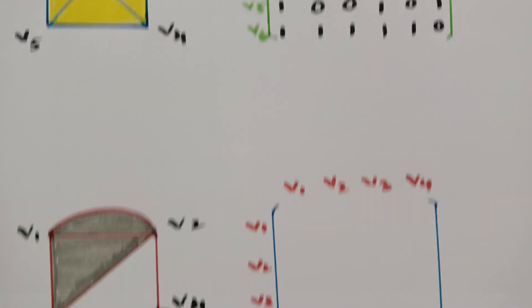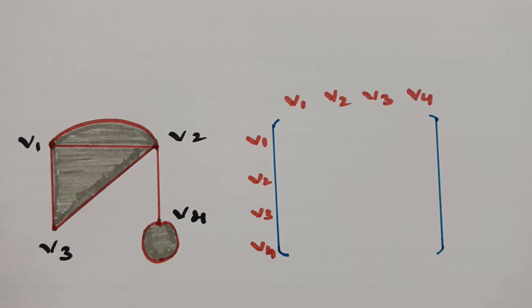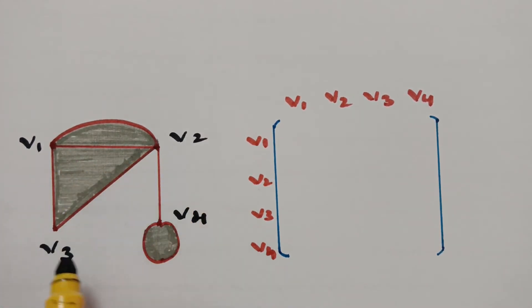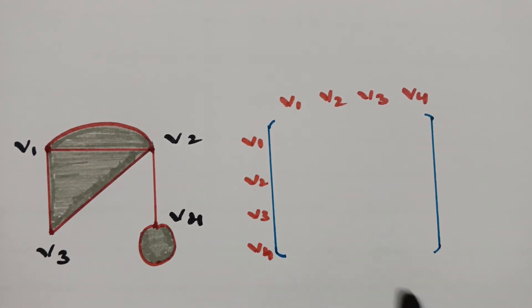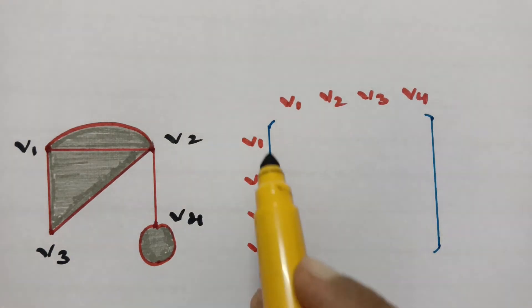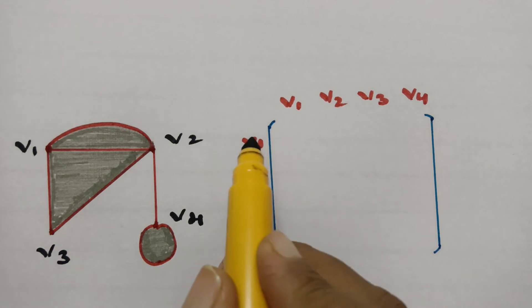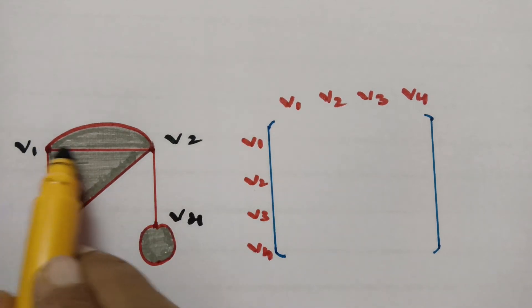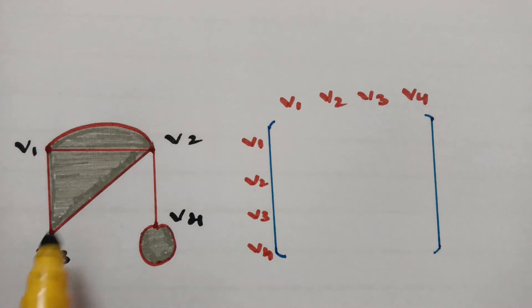The next figure is a new graph. In this graph, the vertices are V1, V2, V3, and V4. Now we have to make an adjacency matrix here, keeping V1, V2, V3, V4 as both rows and columns. First I am going with V1. V1 has two edges with V2 and one edge with V3.